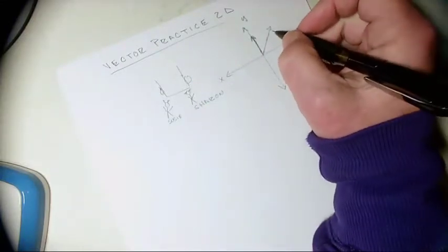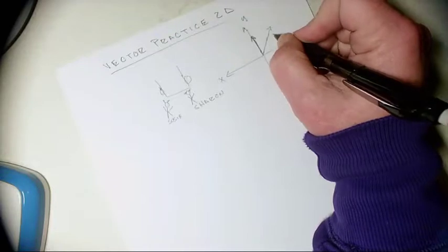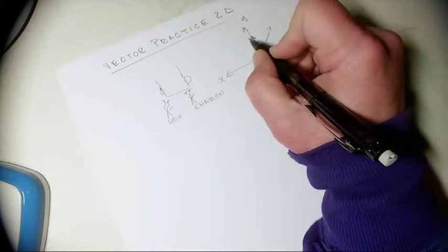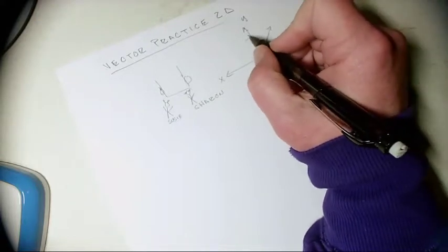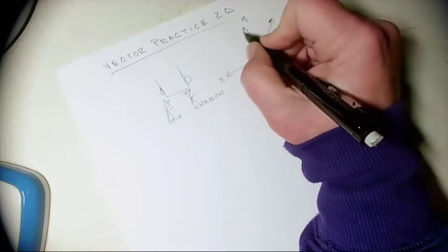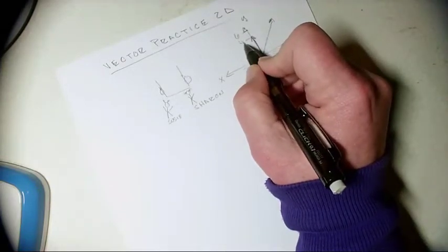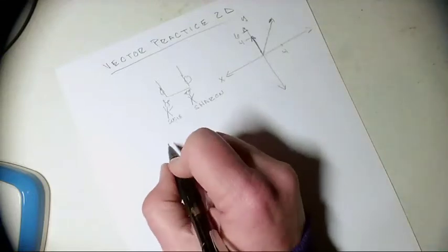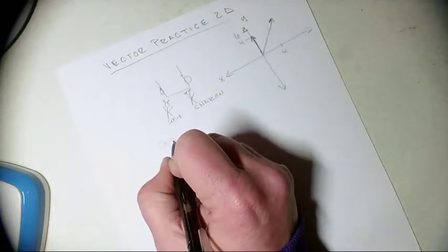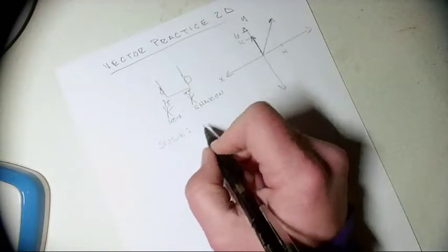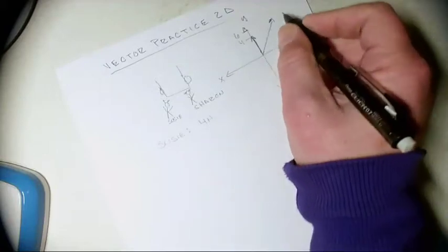So let's see. We're going to call this guy, I don't know, let's say four in the x. And I want to make this a little longer. We'll call this six in the y, and this one we'll call four in the y. So Susie has force components of four newtons in the x hat.